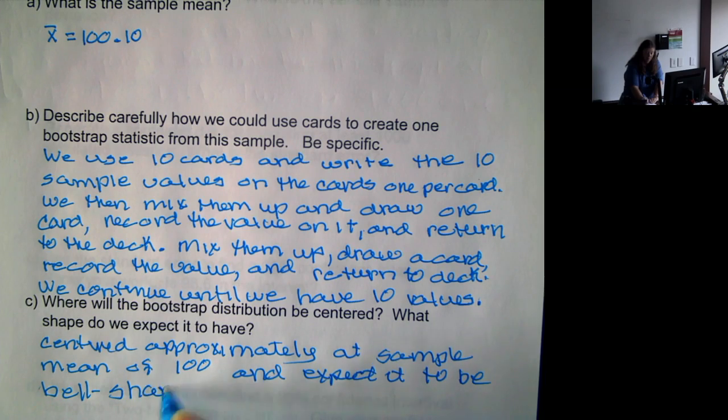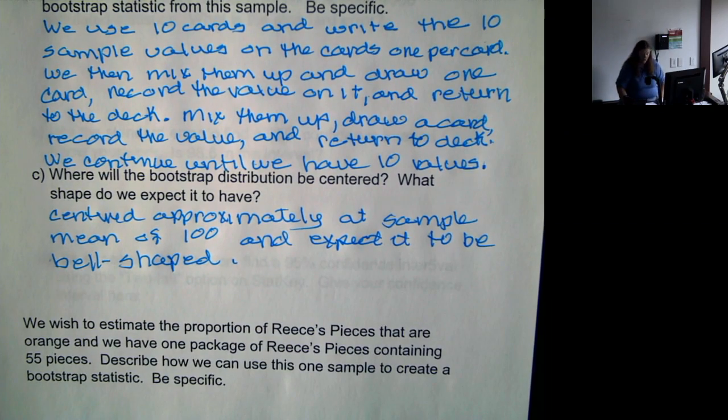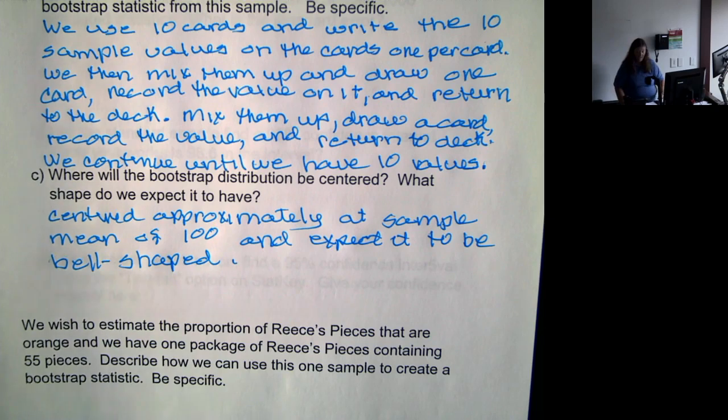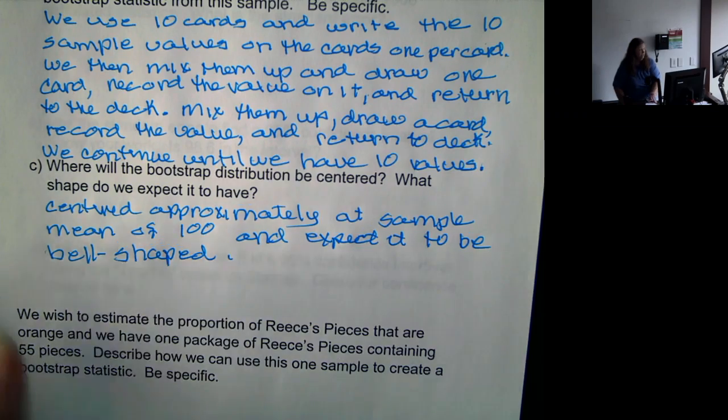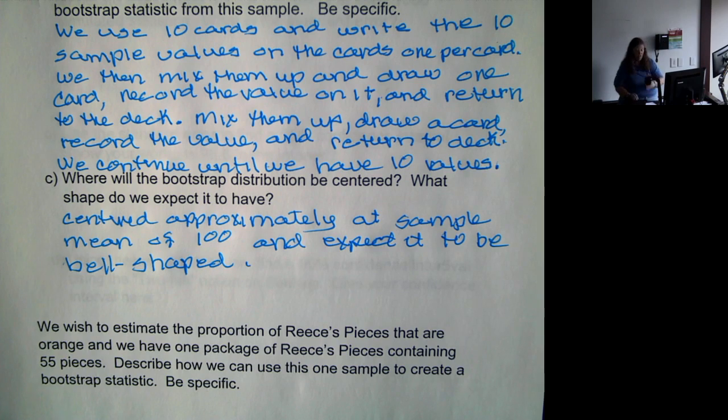We're going to estimate the proportion of Reese's Pieces that are orange, and we have a package of Reese's Pieces containing 55 pieces. So how can we use this one sample to create a bootstrap statistic?